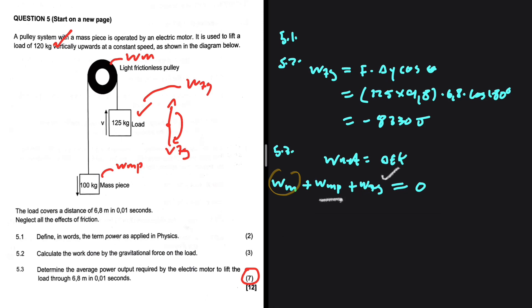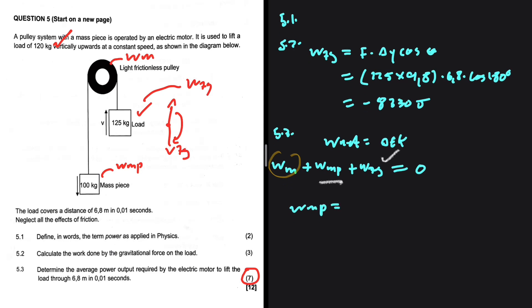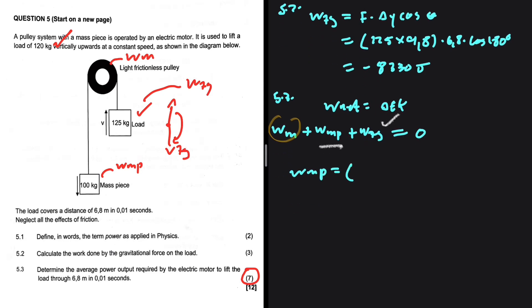Let's find the work done by the mass piece separately. The work done by the mass piece will be equals to F, which is gravitational, 100 multiplied by 9.8, the distance covered 6.8, and a cos of zero. We've already determined that the mass piece is doing positive work.